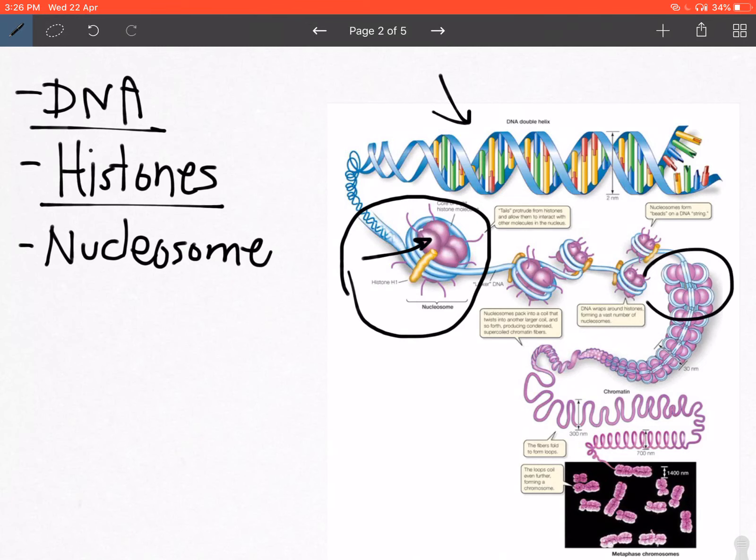It forms a structure that is denoted by the light purple color over here, and that structure is known as chromatin. Now the chromatin is normally present loosely arranged in the cell nucleus.